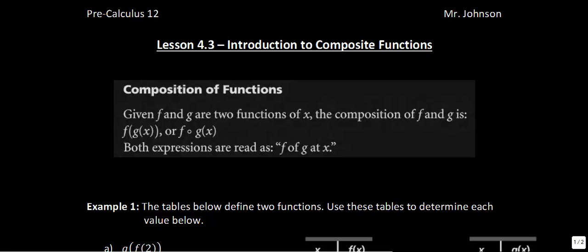The first thing we start with is the definition. Given f and g are two functions of x, the composition of f and g is f of g of x, also written as f∘g of x. Both expressions are read as f of g of x.